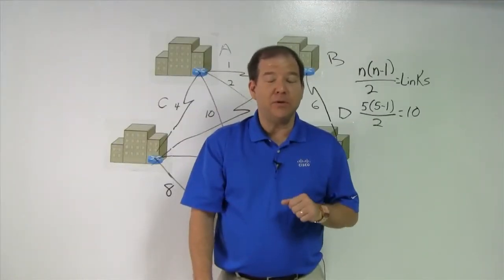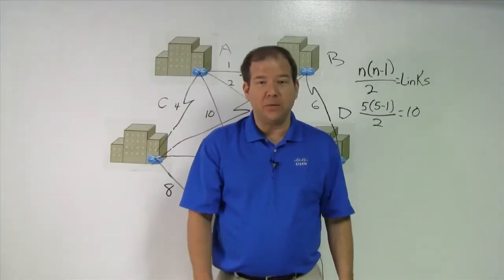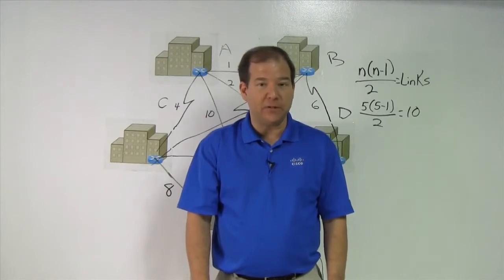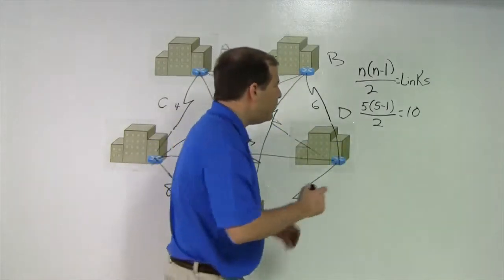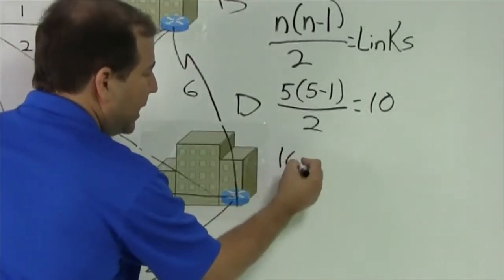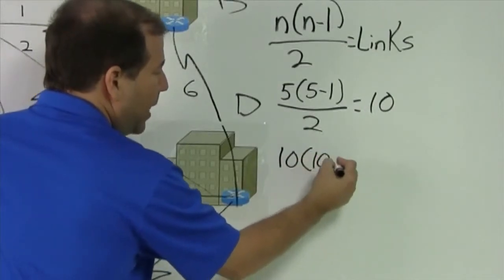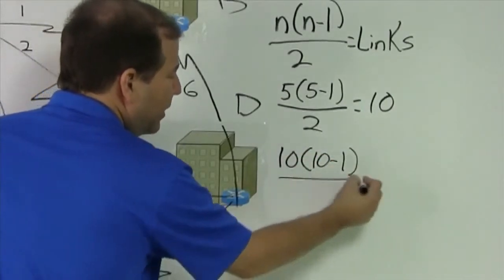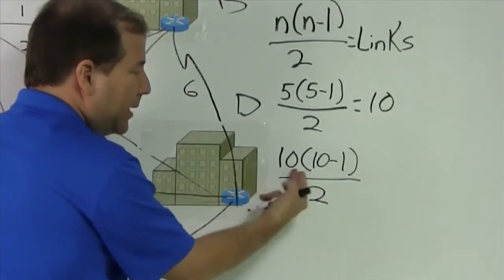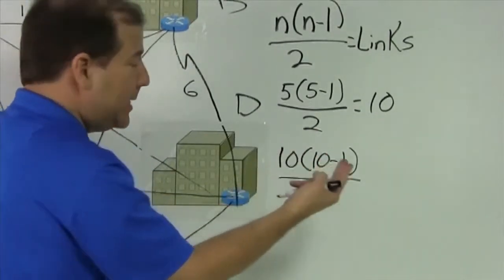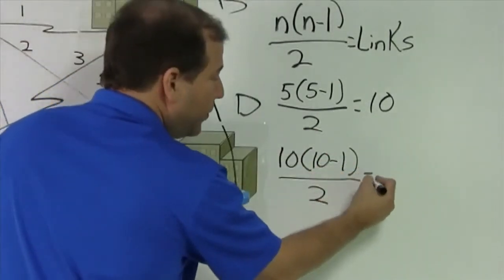Well, did you take the time to do the math? Do you know how many links it would take to fully mesh 10 different sites? Let's do the math together. If we had 10 sites, that's 10 times 10 minus 1 divided by 2. In other words, 10 times 9 is 90 divided by 2 would be 45.